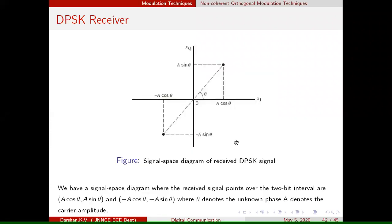For every TB instant, one signal is received. The signal may carry zero phase — coordinate (A cosθ, A sinθ) — or may be out-of-phase — coordinate (−A cosθ, −A sinθ). The out-of-phase signal occupies the opposite location from the in-phase signal. Here, A is the amplitude of the carrier and θ is the phase introduced by the channel.